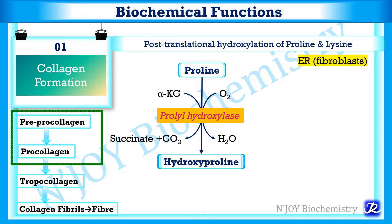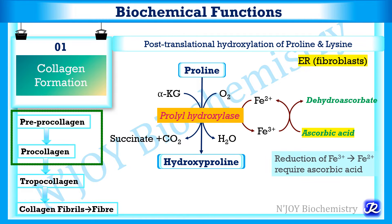This is the reaction showing hydroxylation of proline to hydroxyproline by prolyl hydroxylase. This is a dioxygenase enzyme requiring molecular oxygen. Prolyl hydroxylase has ferrous ion in its active form. During the hydroxylation reaction, the ferrous ion is oxidized to ferric ion. For the reduction of ferric ions back to ferrous ions, vitamin C is required. Therefore, vitamin C is important for the reduction of ferric ions to ferrous ions so that the hydroxylation process continues, which is required for collagen formation.